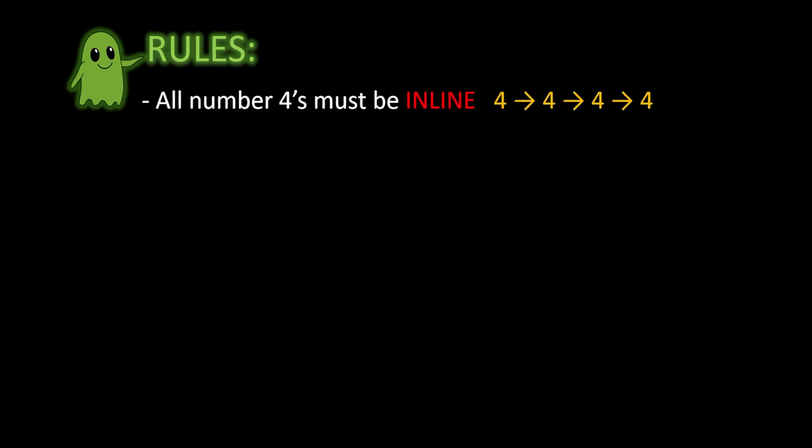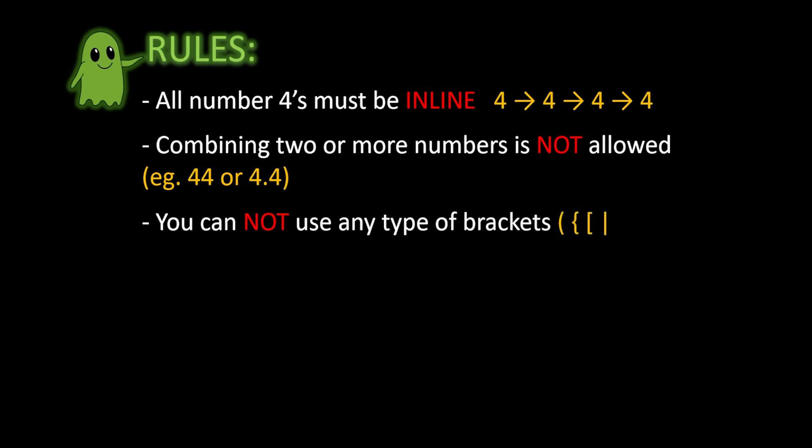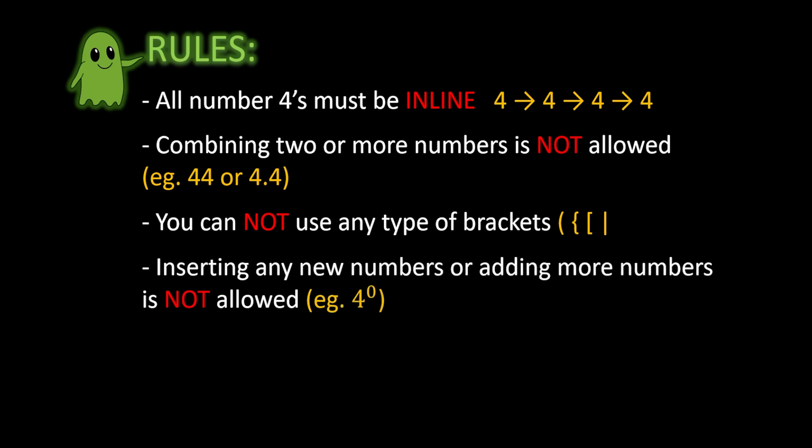The first rule is that all number fours must be positioned in line. The second rule states that combining two or more numbers is not allowed, so basically you cannot combine two fours to get 44, or 4.4, or anything else. The third rule states that you cannot use any type of brackets.